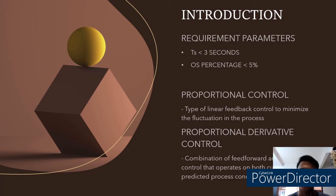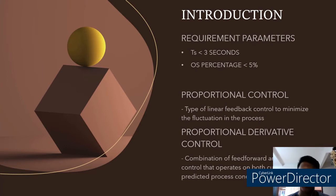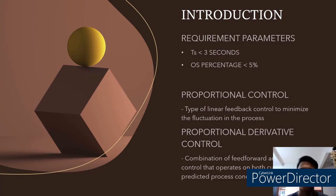Proportional P control is a type of linear feedback control system which uses the reading of the sensor to feed back into the whole system. As the simplest form of control used in the closed loop system, it aims to minimize fluctuation in the process only. On the other hand, proportional derivative PD control is a combination of feed-forward and feedback control, as it operates on both the current and predicted process conditions. Hence, the expected output of the PD controller compared to the P controller should be better.